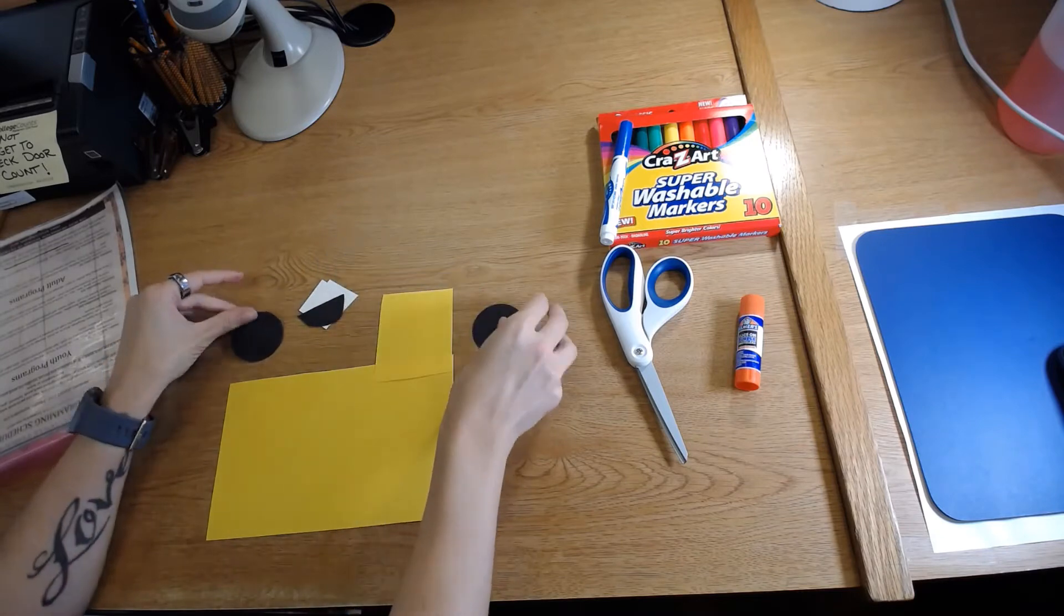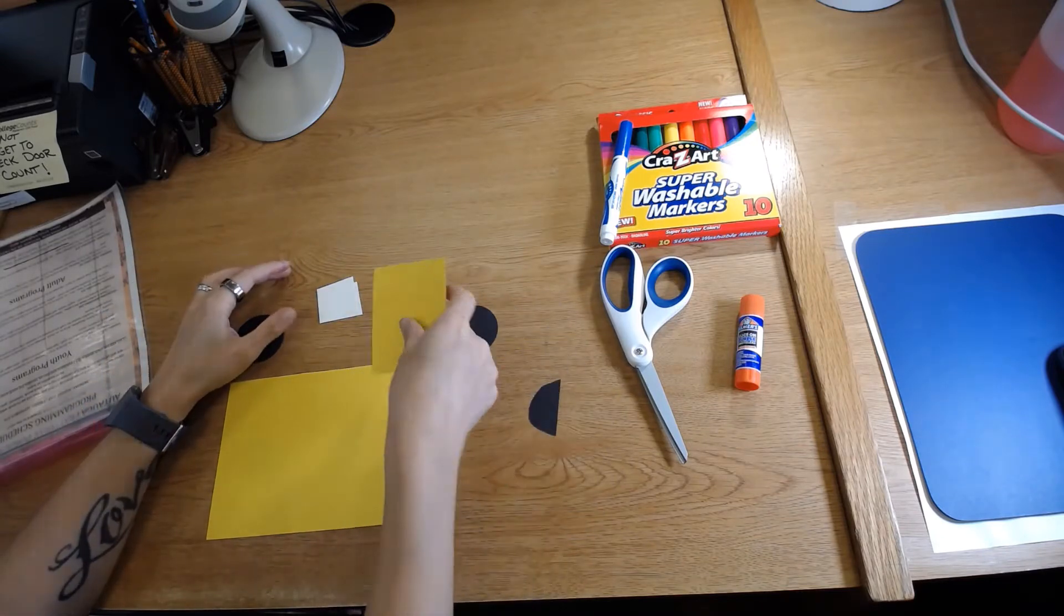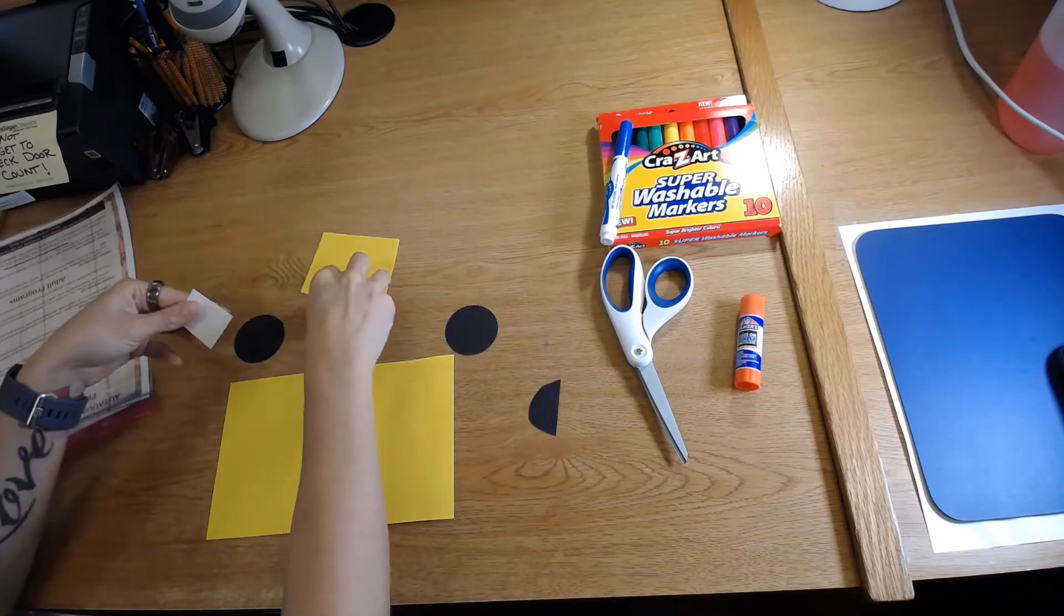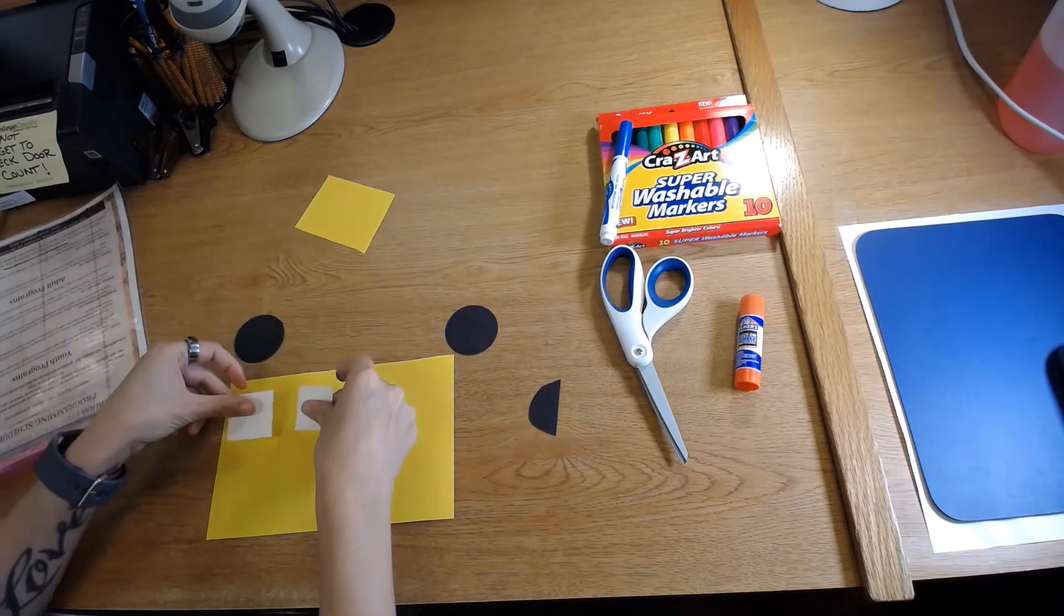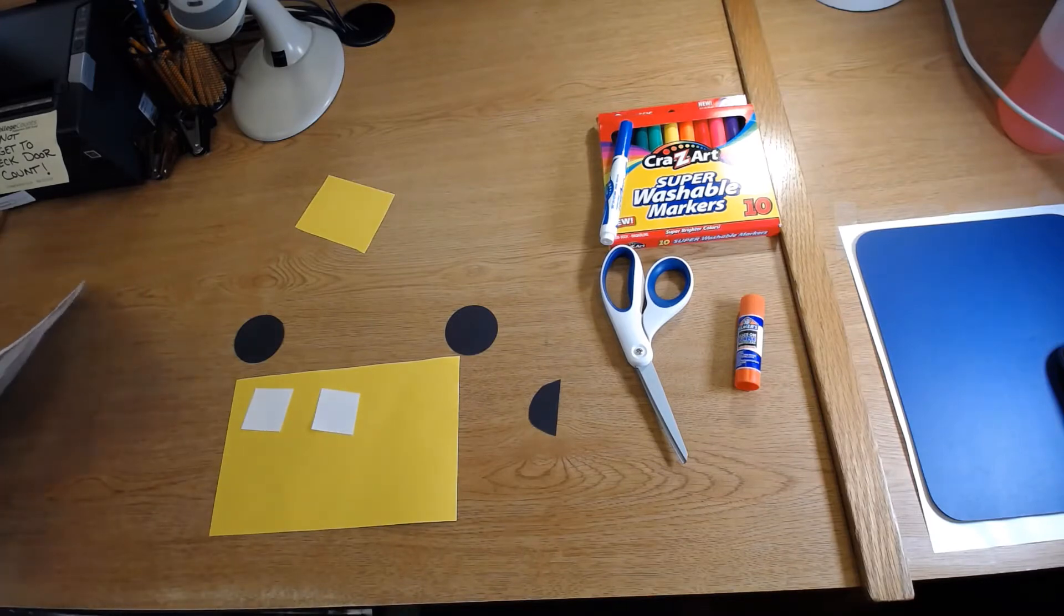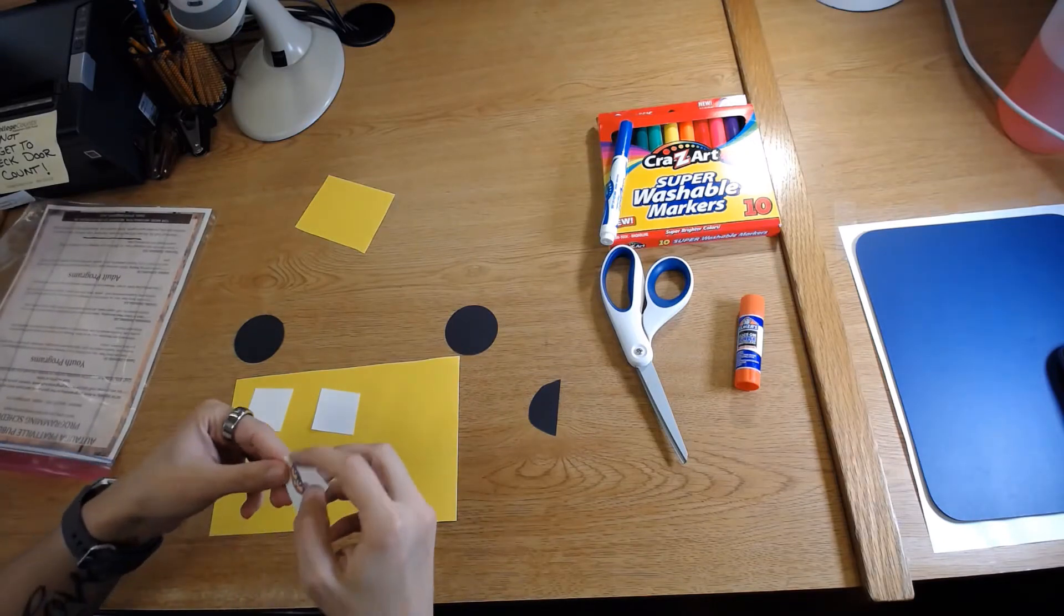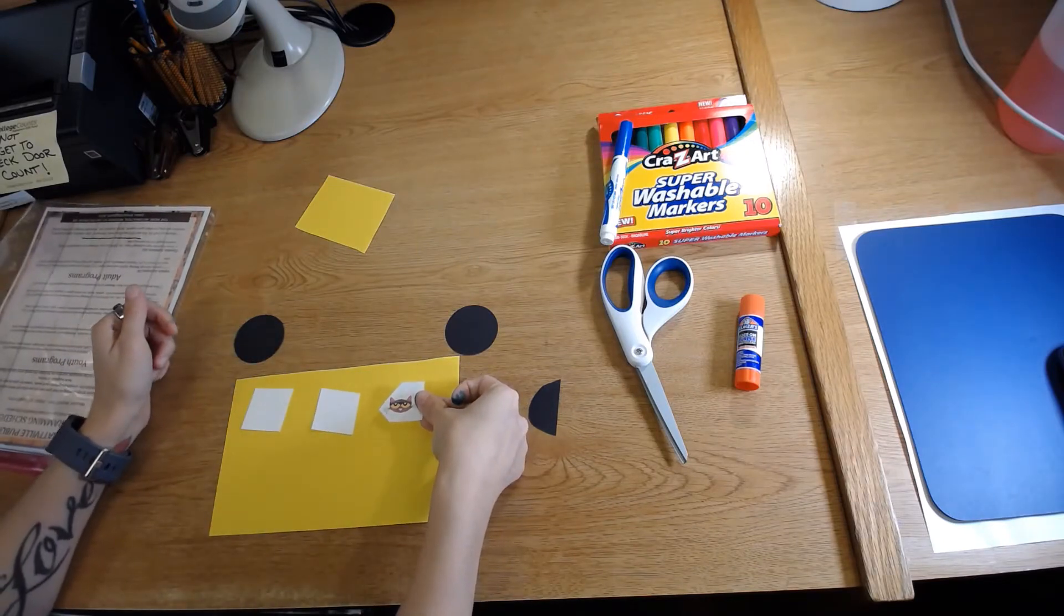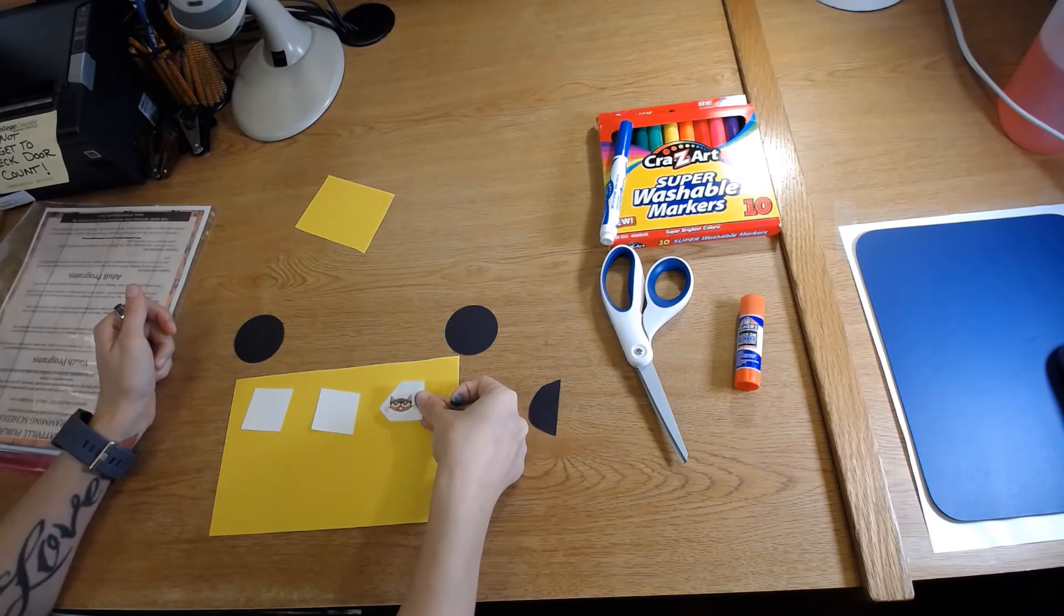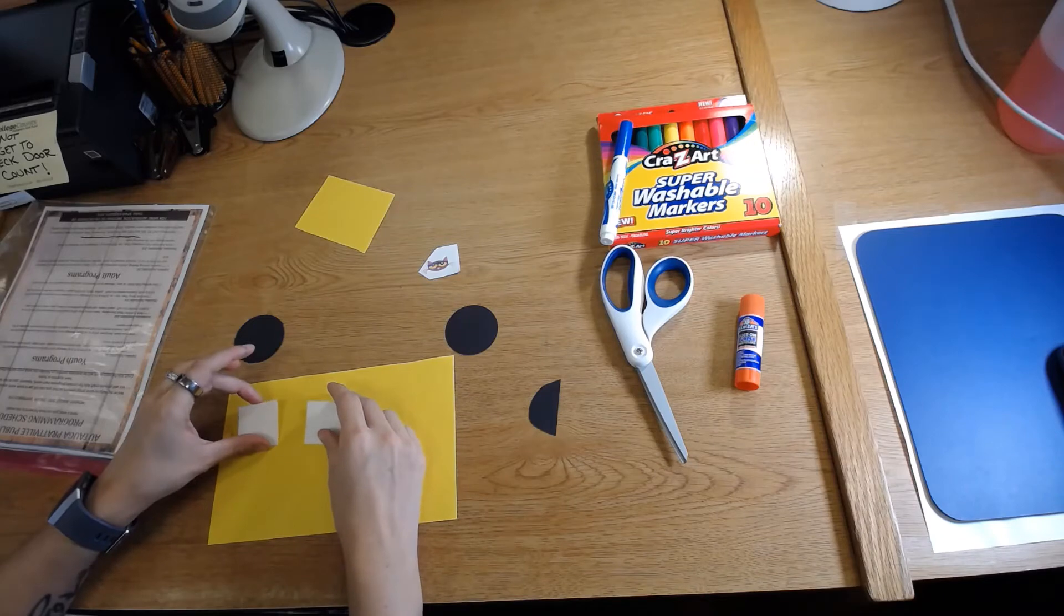...one black semicircle, and a couple of white squares. And then our final element for this craft, we'll need our little Pete the Cat sticker because Pete the Cat is driving the bus.